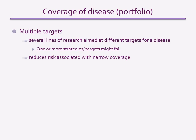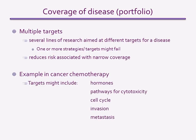When selecting drug targets, pharmaceutical companies like to hedge their bets by following up multiple potential targets for a disease. This is known as the disease portfolio. Rather than deciding to aim at a first or best-in-class drug, they are likely to include both options in their portfolio so that if the new target fails, they have a backup. This reduces some of the high risks associated with drug discovery. An example of how a portfolio might work is in cancer chemotherapy, where multiple targets are found in different aspects of tumour maintenance, growth and spread — including a hormone or molecules involved in pathways for cytotoxicity, cell cycling, tumour invasion and metastasis.